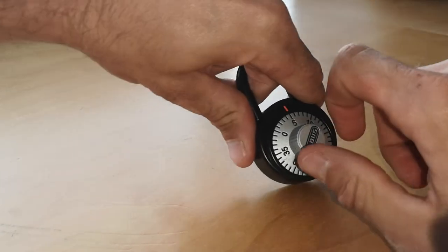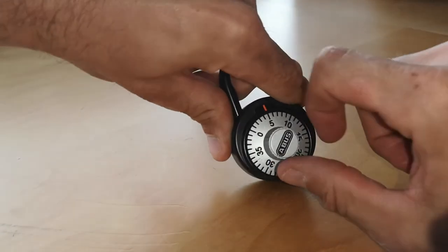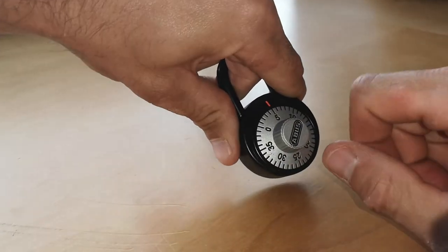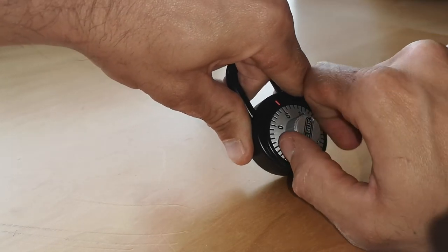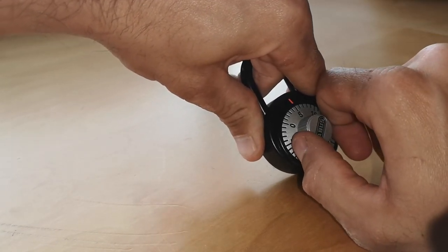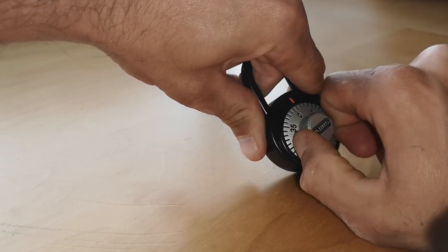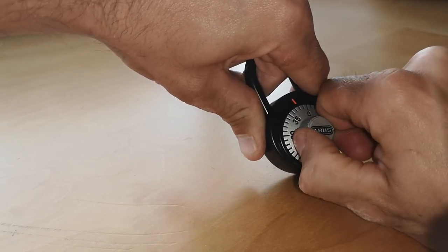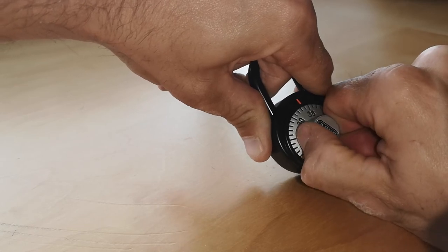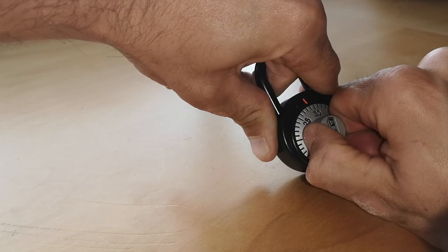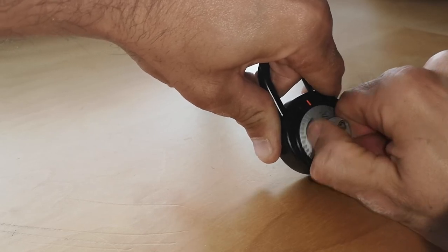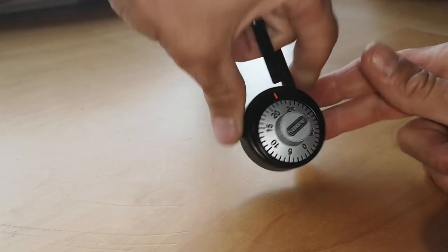And now what we've got to do is just turn it clockwise again, applying tension to the shackle. And we're going to go clockwise until it should, at some point, pop open.